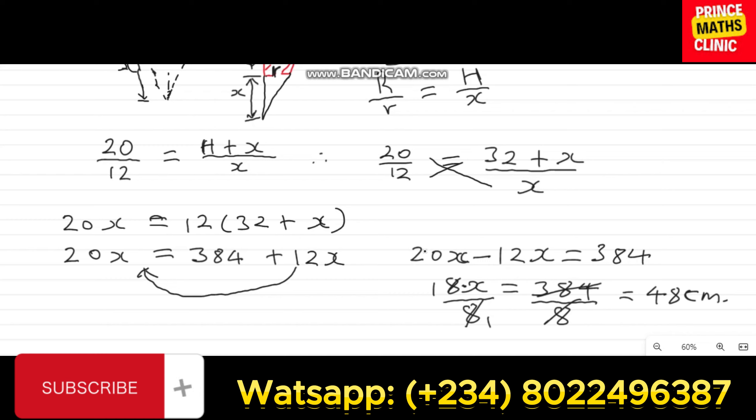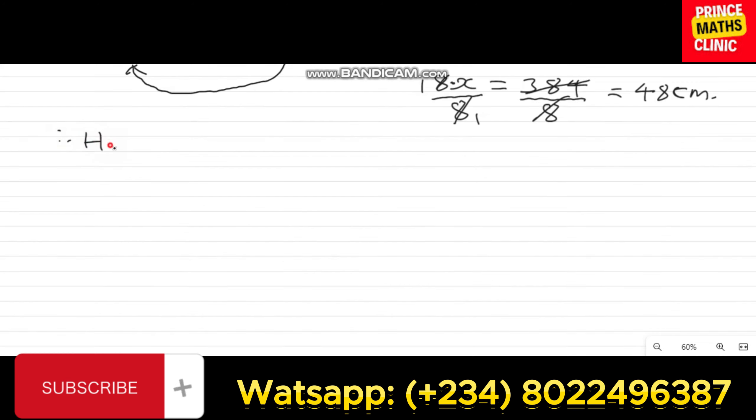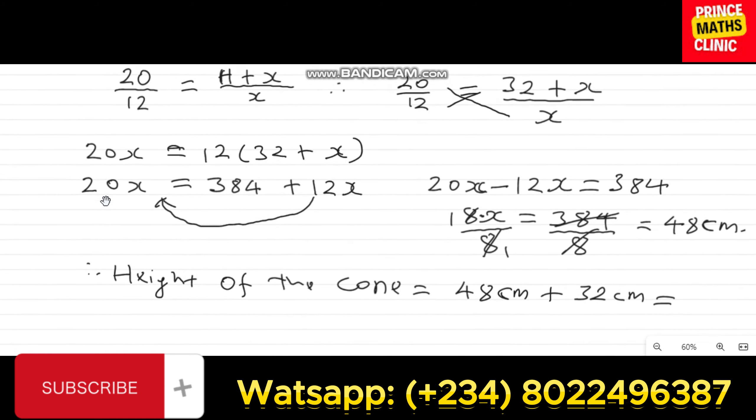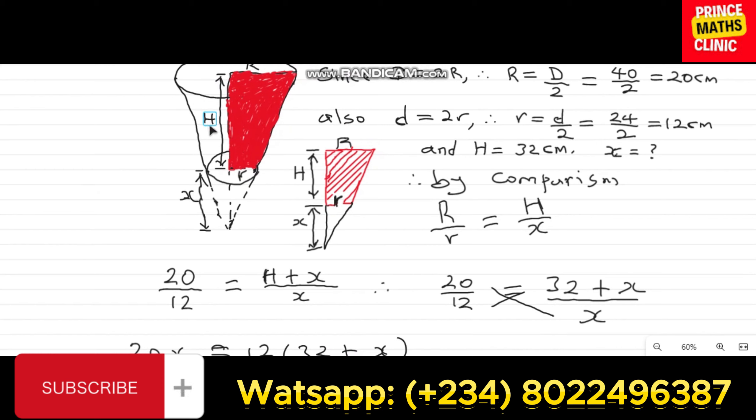So now that we know the value for our X, it means that we can now know the full height of the cone. Therefore, the height of the cone is now 48 centimeters plus the value we have for H, which is 32 centimeters. Now, let's look at the diagram again so that you can understand what I just said. Looking at the diagram, the full height of the cone is actually H plus X. So, permit me, let me just put this to be H plus X so that it will be very clear to you. So, with this now, no confusion again.